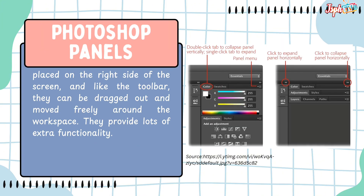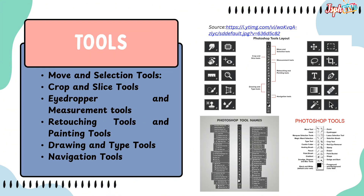Photoshop Panels are placed on the right side of the screen. Unlike the toolbar, they can be dragged out and moved freely around the workspace, providing lots of extra functionality. Tools include Move and Selection Tools, Crop and Slice Tools, Drawing and Measurement Tools, Retouching Tools, Painting Tools, Drawing and Type Tools, and Navigation Tools.